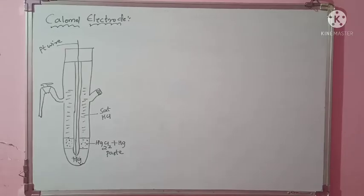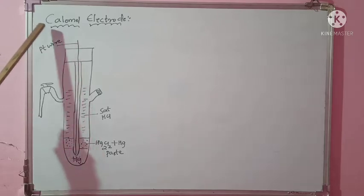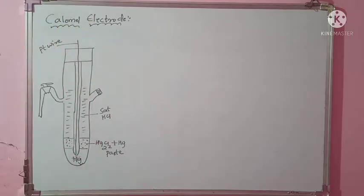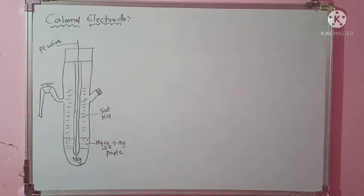Hi, hello, this is Shweta. Welcome to my classes. Today we will be understanding another type of electrode, that is the calomel electrode. It is also called a secondary reference electrode. In a previous video, you saw the reference electrode that is SHE. So this calomel electrode is said to be a secondary reference electrode.